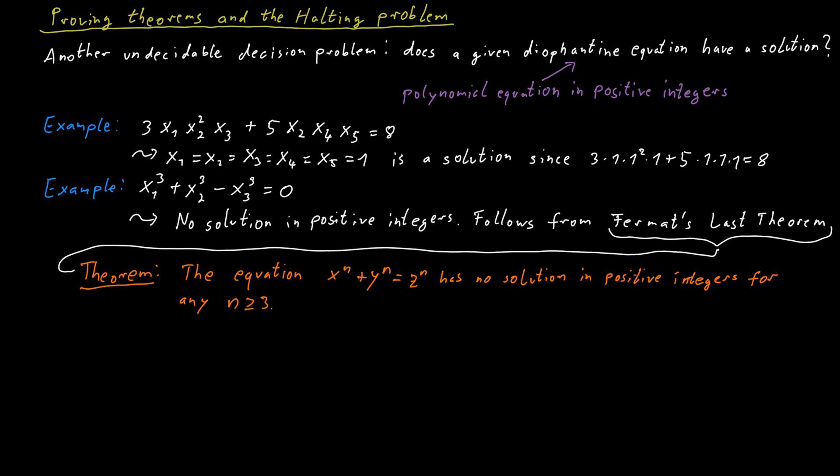So these are two examples of Diophantine equations, and in both examples we were able to determine whether they have a solution or not. In the first case this was simple; in the second case we actually needed a quite advanced theorem. So you can see this is not a trivial problem, and in fact this problem is undecidable — there is no Turing machine that decides automatically whether a given Diophantine equation has a solution or not.